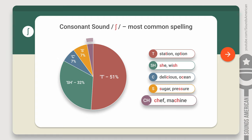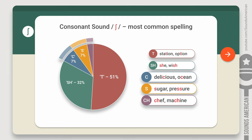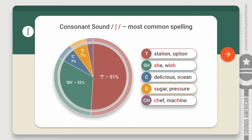Sometimes the SH is represented by the combination of letters CH, like in 'chef' and 'machine'. This may look complicated, but it's really not — there are phonics rules for these spellings. Let us know if you're interested.